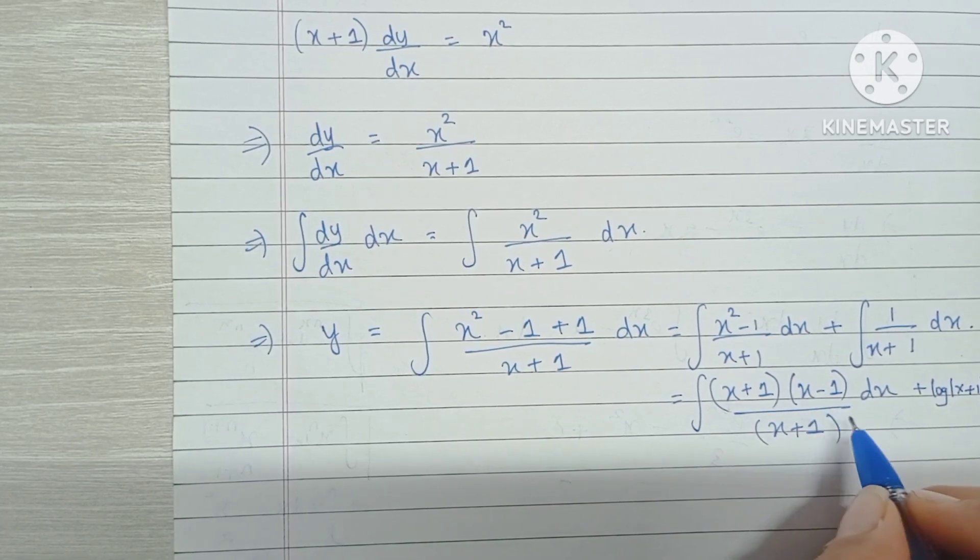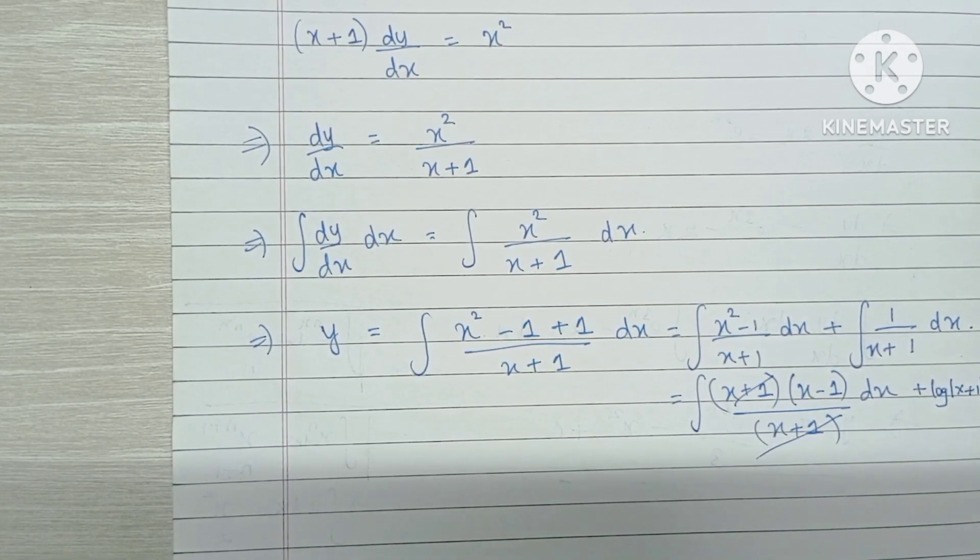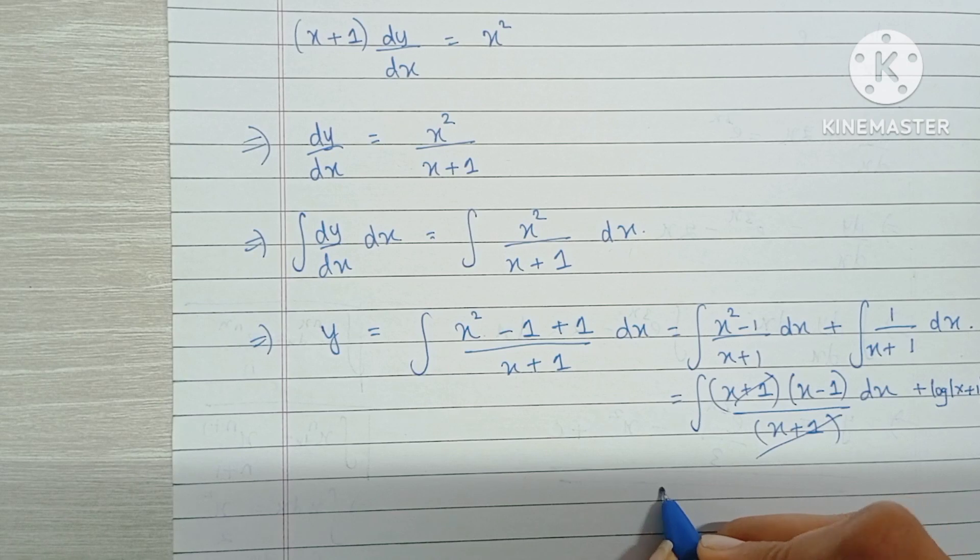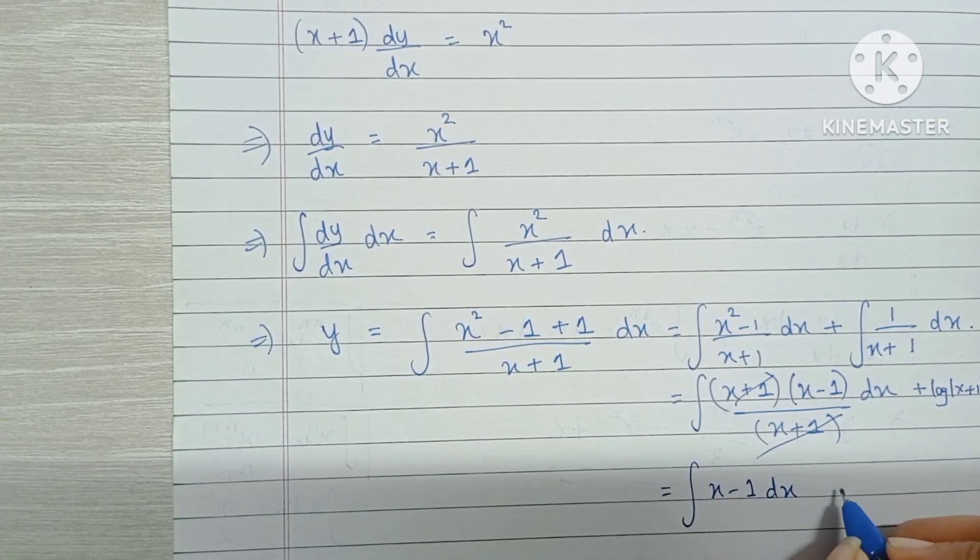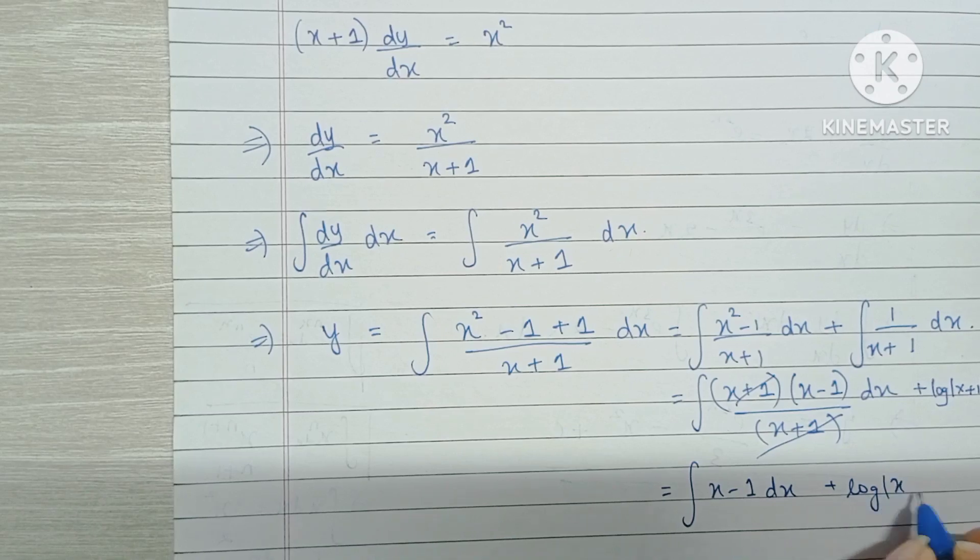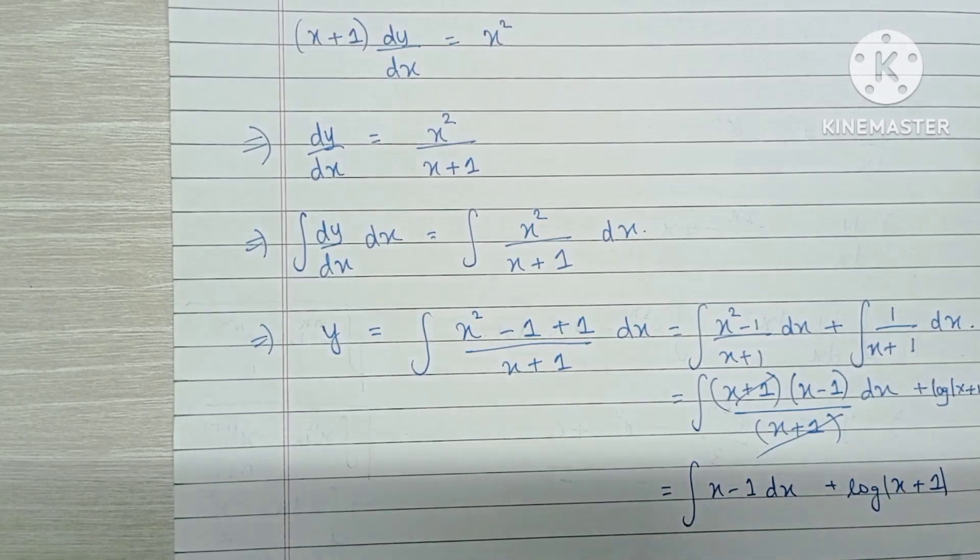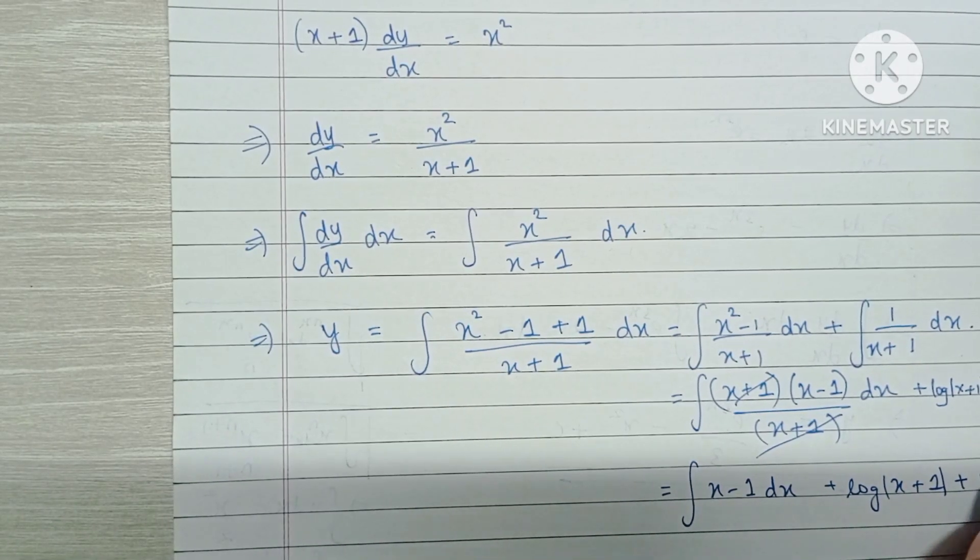Now in this integral we can cancel out x plus 1. So we are simply left with the integration of x minus 1 dx plus log mod of x plus 1. Let's add an arbitrary constant because we always do that after integrating any term.